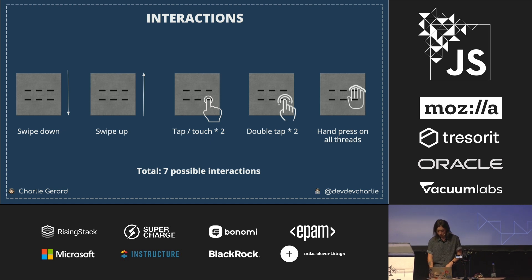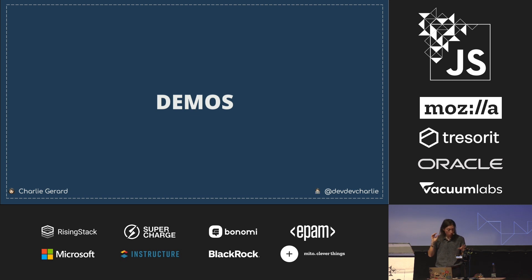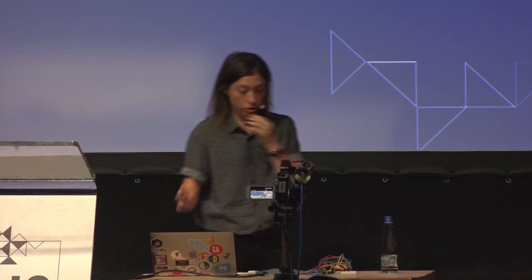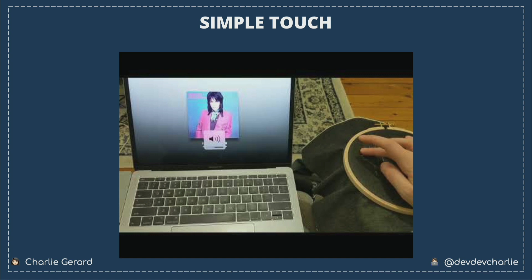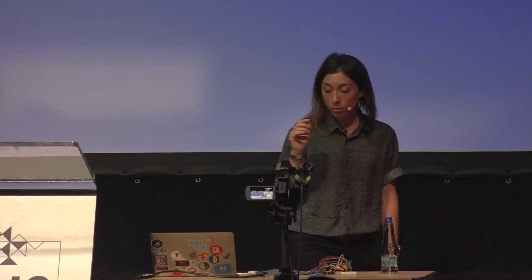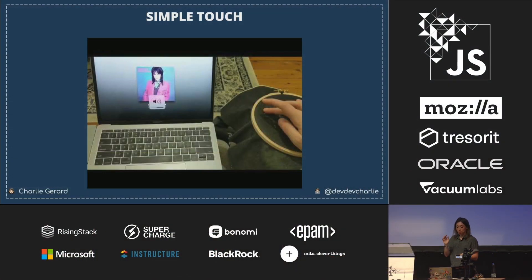I'm going to show you how it works, though not all demos will be live. The first thing I built was augmenting my couch with conductive threads to switch songs on Spotify by just touching the thread. The video isn't working, but what was supposed to happen is: touching threads one by one would switch to the previous or next song, and touching a piece of thread long enough would turn the volume up or down.